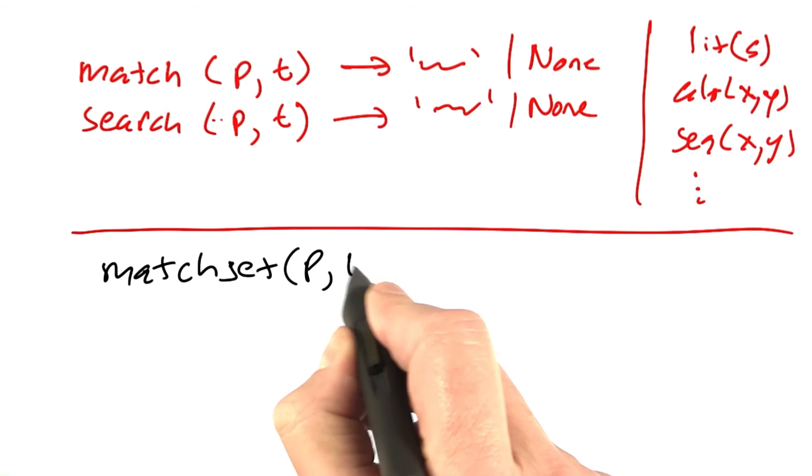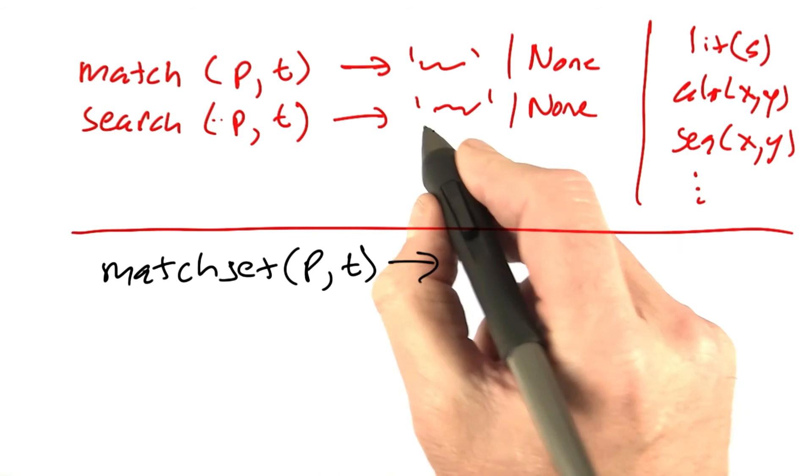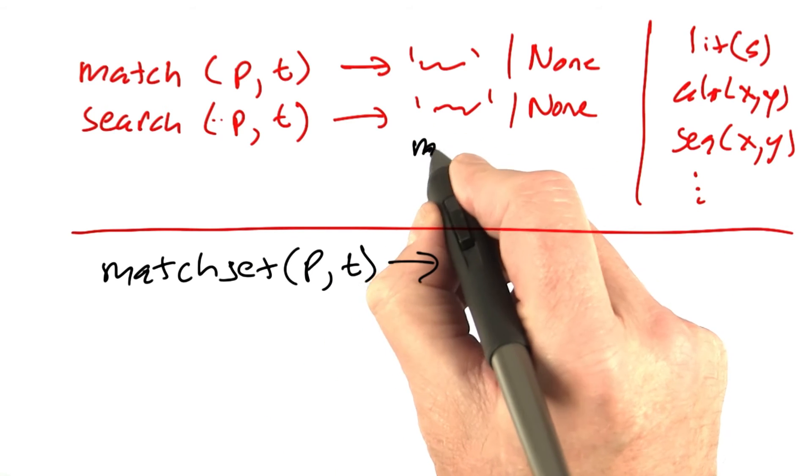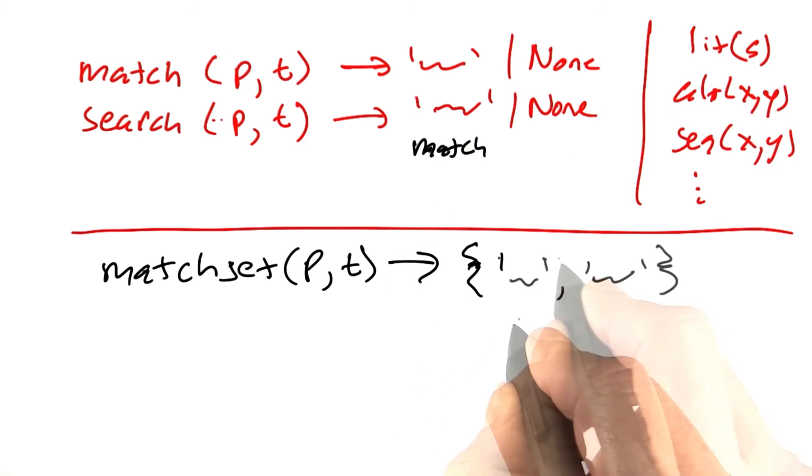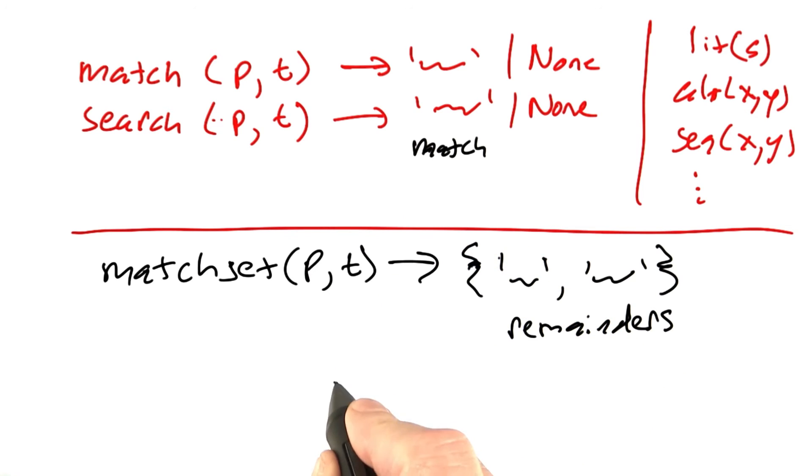It also takes a pattern and a text, but instead of returning a single string which is a match, it returns a set of strings which are remainders. And for any remainder, we have the constraint that the match plus the remainder equals the original text.